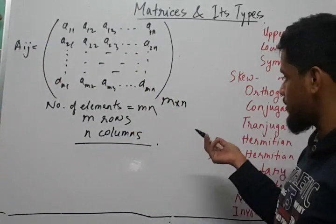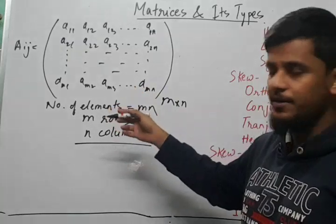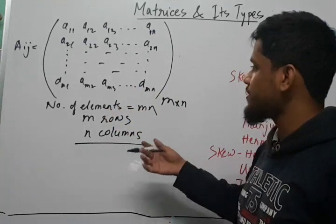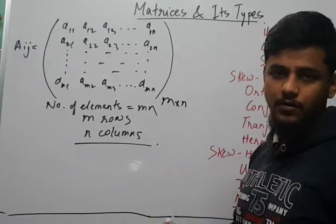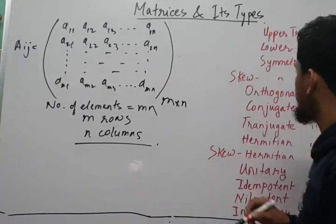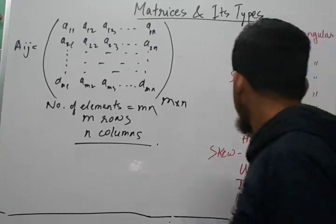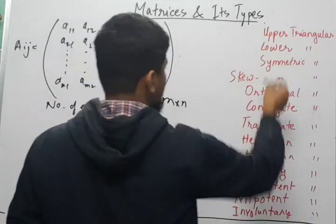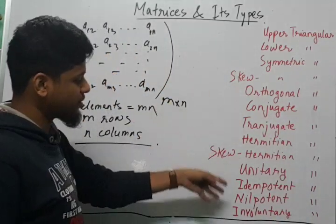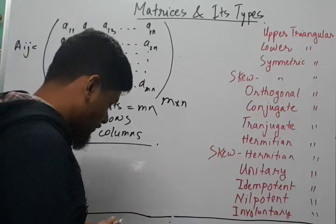I hope most of you are already familiar with what a matrix is, but I've just tried to recap the concept. So now we move on to understanding the types of matrices. We'll be starting off with upper triangular, then lower triangular, symmetric matrix, and so on, going all the way up to involutory matrices.